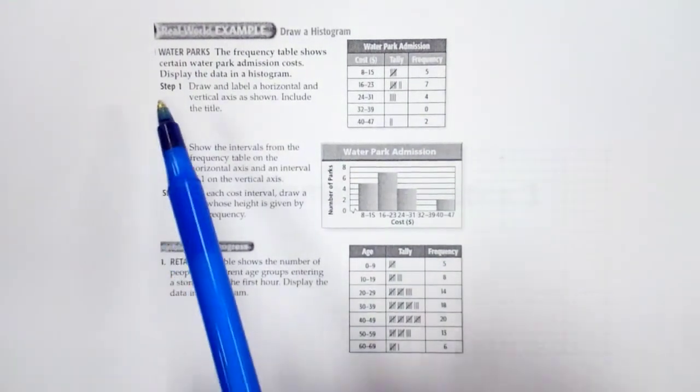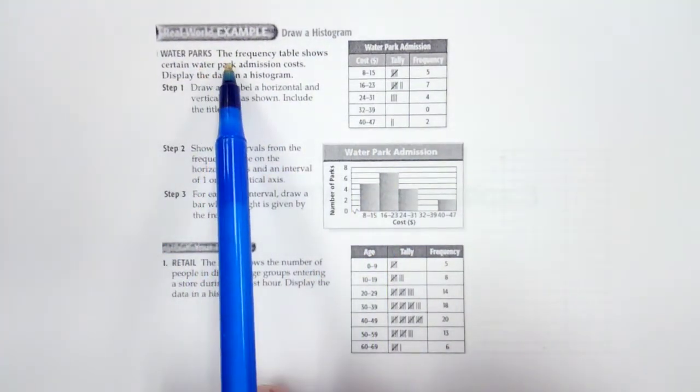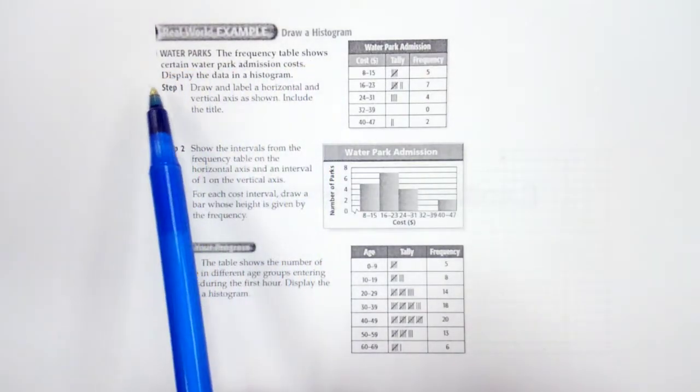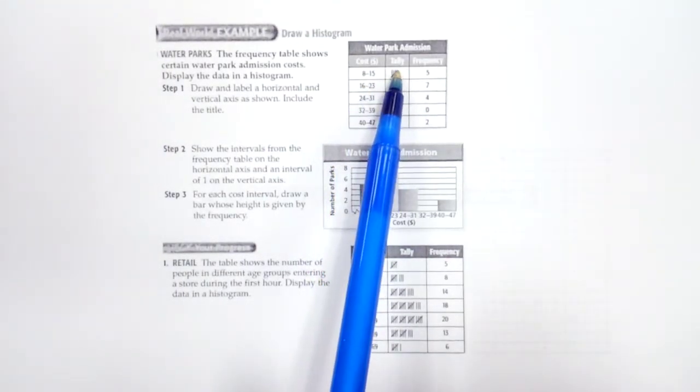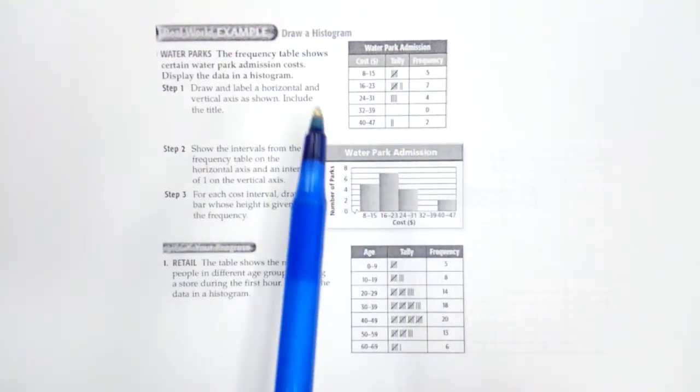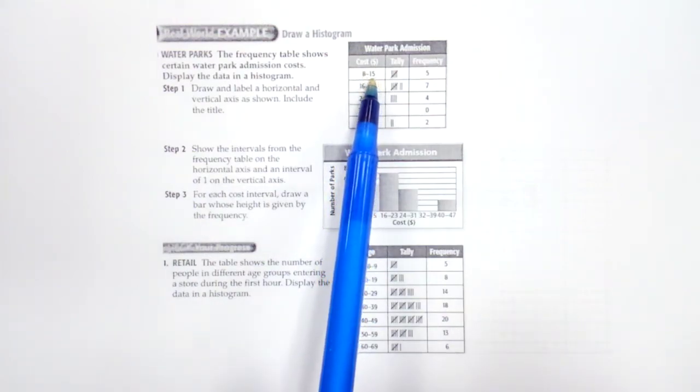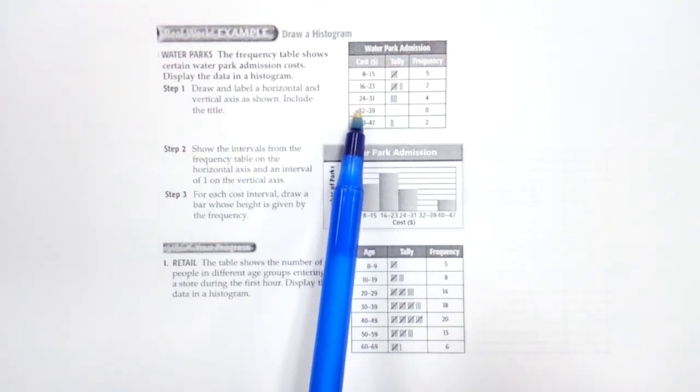Okay, so we have an example of a histogram here. The frequency table shows certain water park admission costs. Display the data in a histogram. So we have between $8 and $15, there's 5, and then so on. So we have 8 to 15, so we have 8 data points.